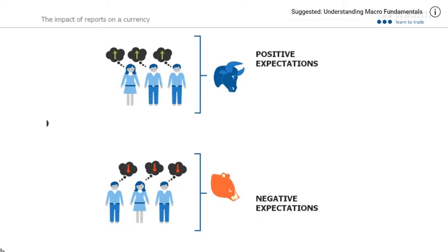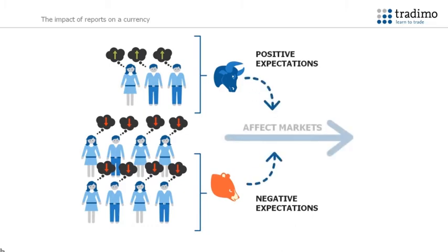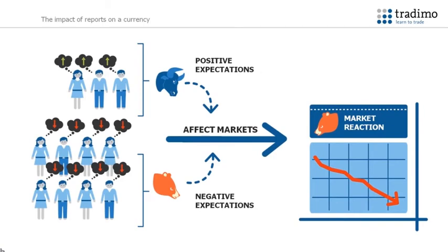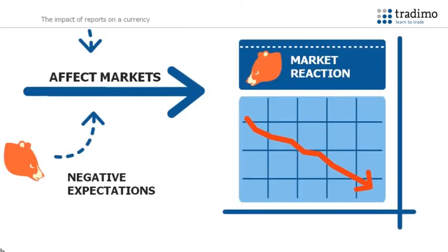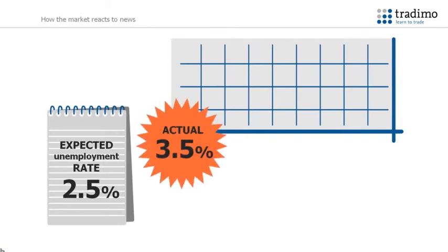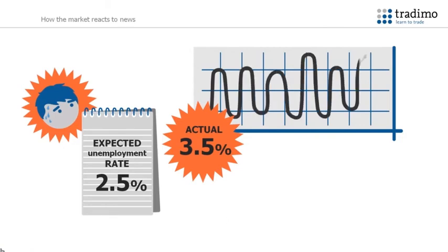For example, if the majority of traders think the results of an economic report will be negative, they tend to sell the currency ahead of the release, causing the price to fall. When this happens, we refer to the markets as being priced in, meaning that by the time the event has taken place, the price has already changed as expected. If the actual results are very different to what was expected, then this tends to have a big impact on the price of the currency.